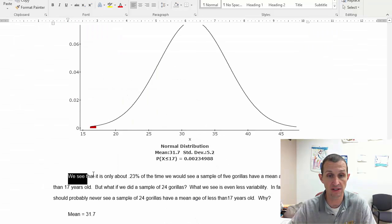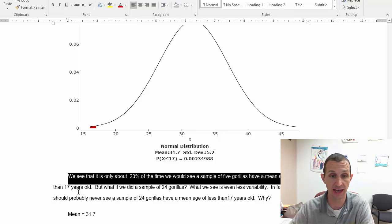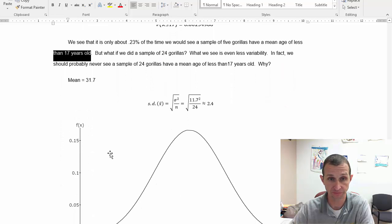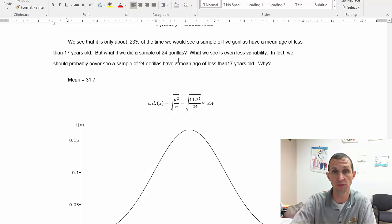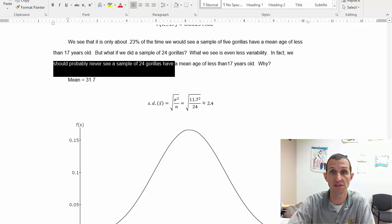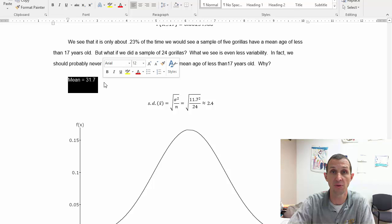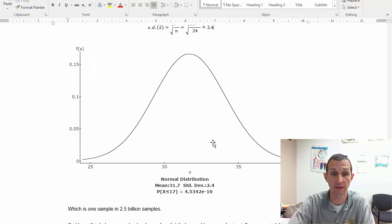And so when we look at it we see that it's only about a quarter of a percent of the time would we see a sample of five gorillas have a mean age of less than 17 years old. But what if we sampled 24 gorillas? I mean five gorillas isn't that much. What about 24 gorillas? What if we took a stratified sample of one gorilla at each of the major zoos and we ended up with 24 gorillas? What we'd see is even less variability. In fact we should probably never see a sample of 24 gorillas have a mean age of less than 17 years old. Well why? Well because if the mean is supposed to be 31.7 the standard deviation of this sample proportion is going to be 2.4. 2.4 is pretty small.